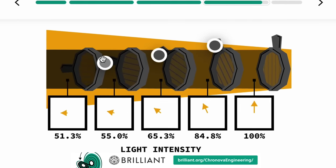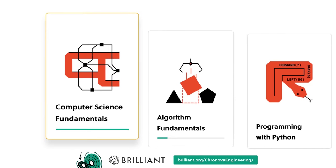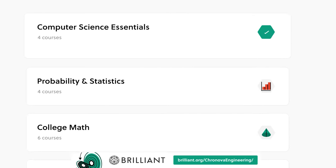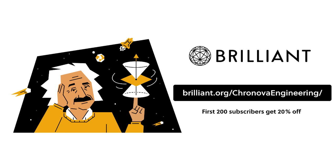To try everything Brilliant has to offer free for a full 30 days, visit brilliant.org slash Cronova Engineering or click on the link in the description. The first 200 viewers to sign up will get 20% off Brilliant's annual premium subscription.